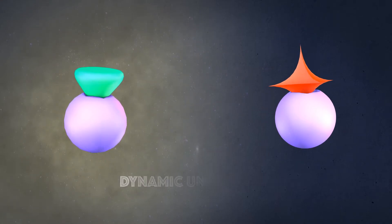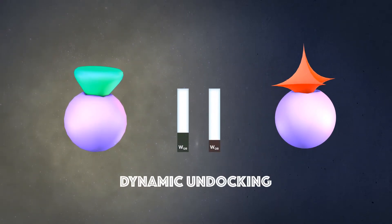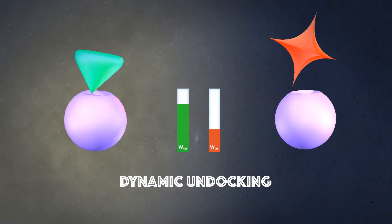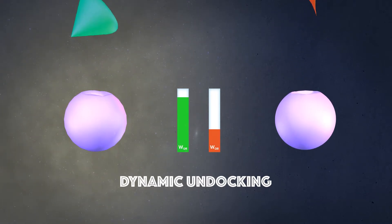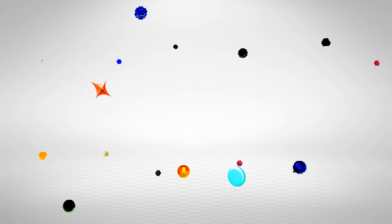By using dynamic undocking, a fast computational method, we predict the quasi-bound state that tells us if the protein and the candidate molecule form a sturdy complex. The more stable the complex is, the more likely the molecule will be a good candidate.